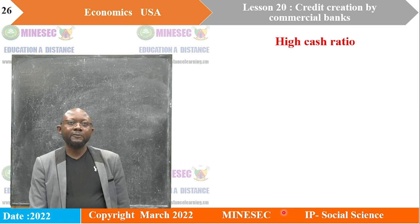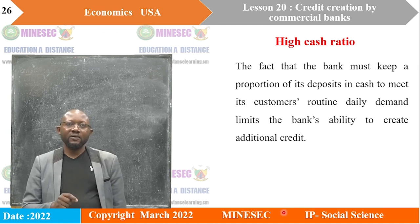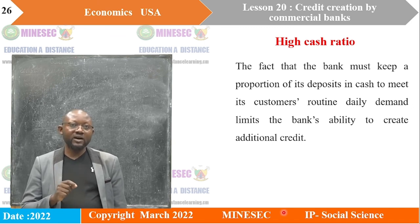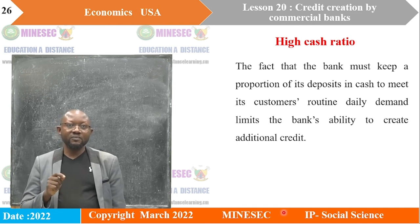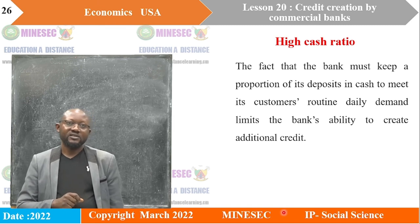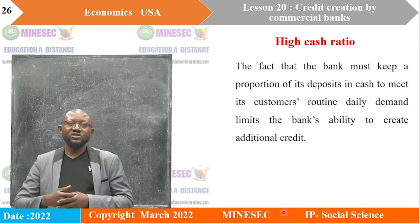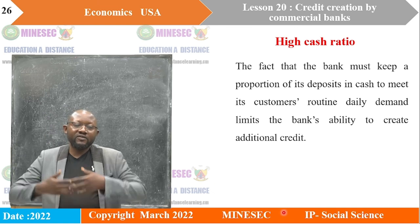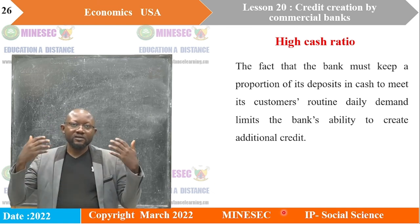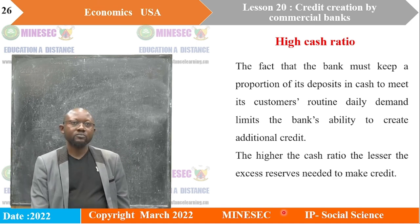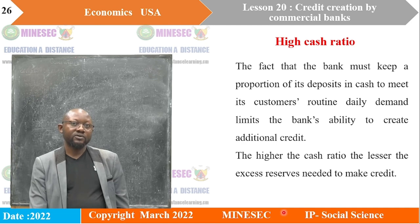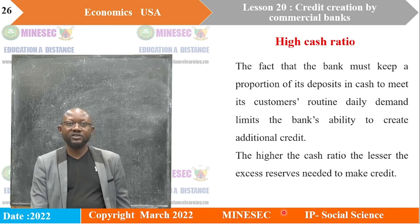Another limitation is a high cash ratio. The fact that the bank must keep a proportion of its deposits in cash to meet its customers' routine daily demand limits the bank's ability to create additional credit. When the cash ratio is high, more money is kept and less is available to give out as loans, meaning less credit will be created. The higher the cash ratio, the lesser the excess reserves available to make credit.